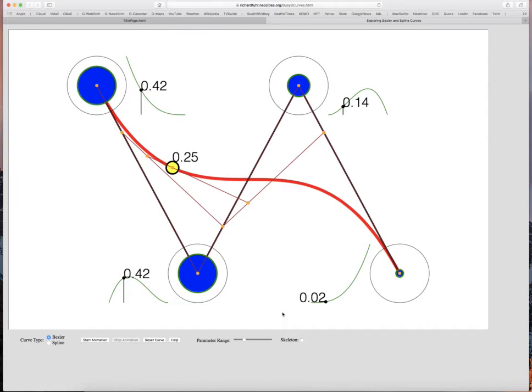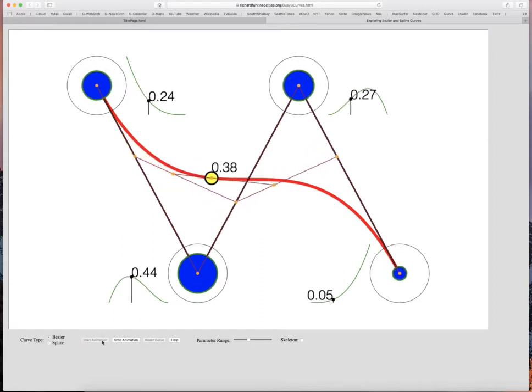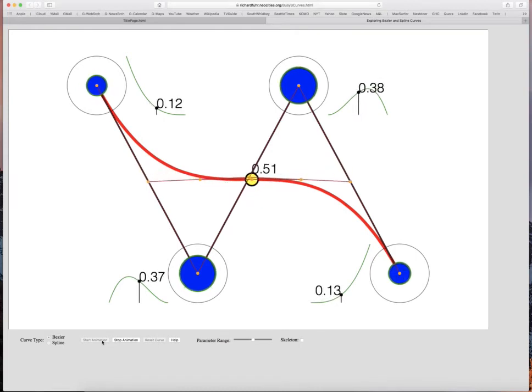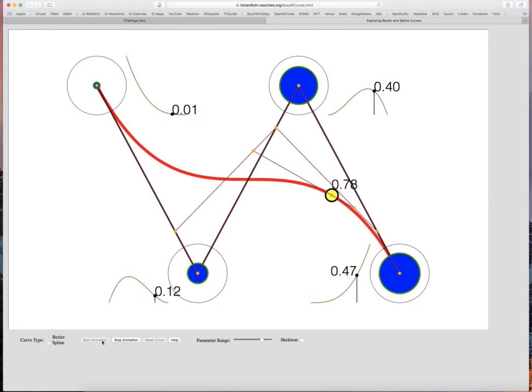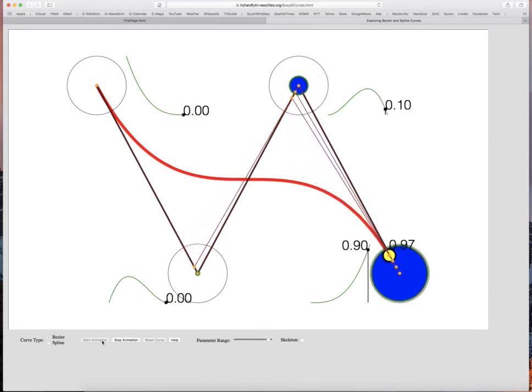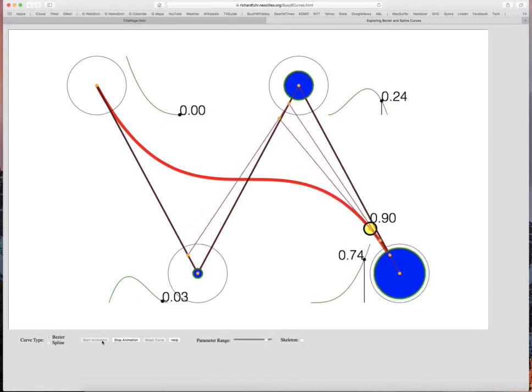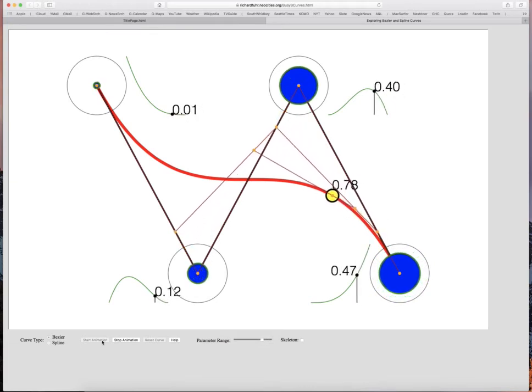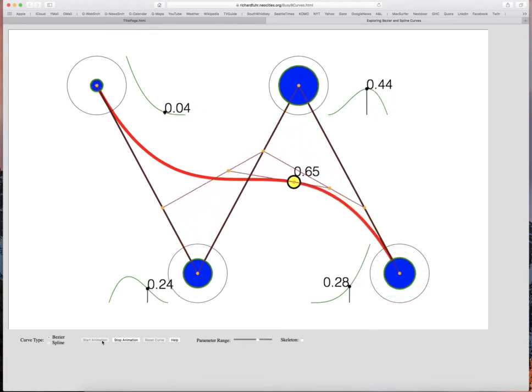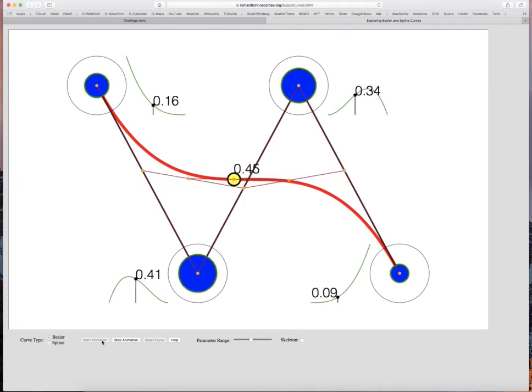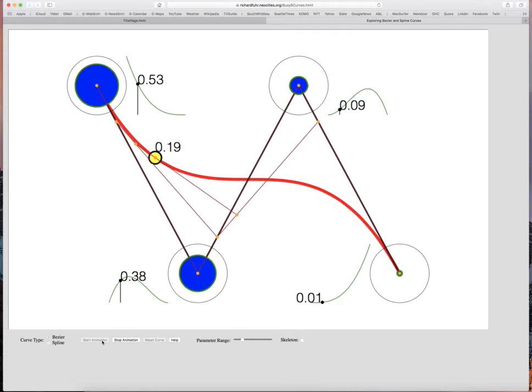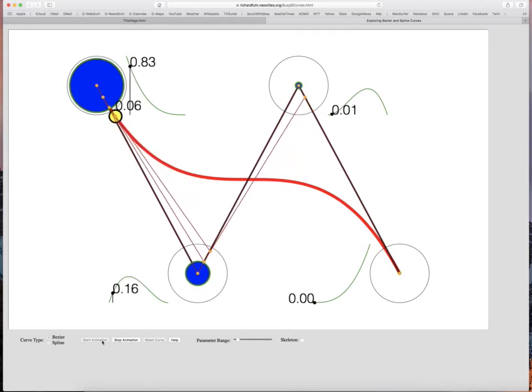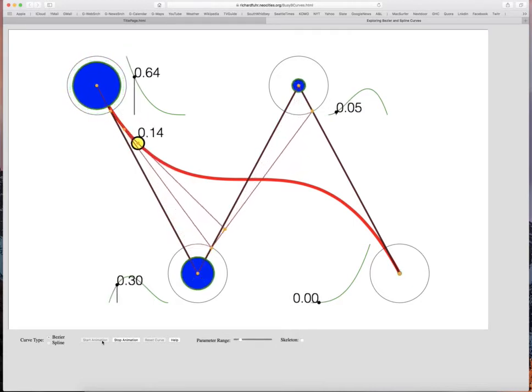So if I start the animation, as you see the yellow point move along the curve, the blue circles get larger and smaller as the point moves. And as the point moves, the parameters move. The size of each blue circle is determined by the value on the graph of the curve that's colored green right next to each control point.